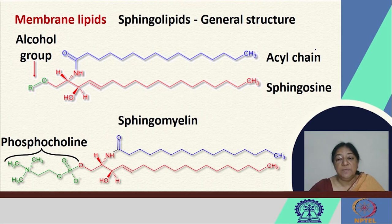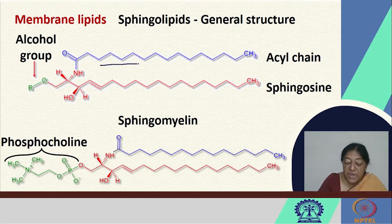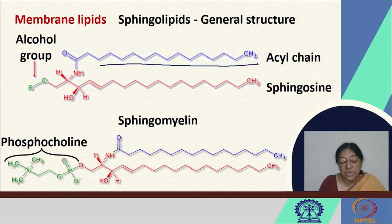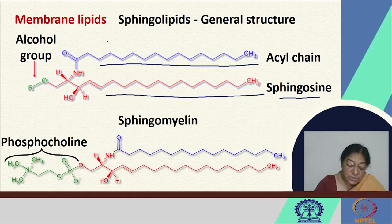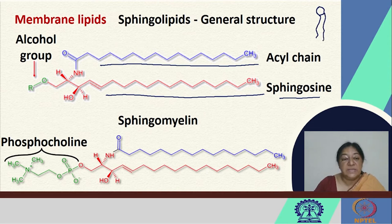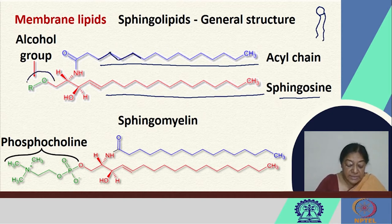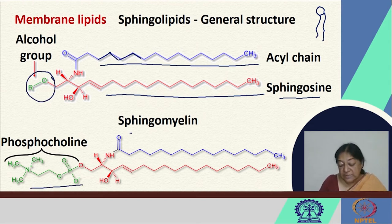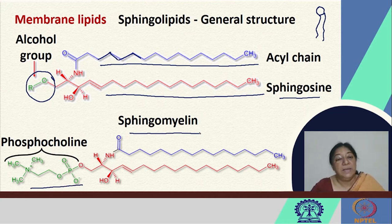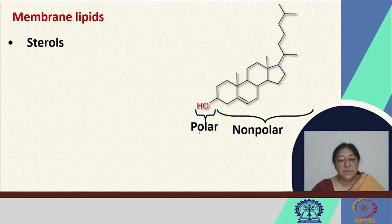Looking at sphingolipids, in this case we have one acyl chain and the other is a sphingosine, based on the fact that we have a polar head group and two hydrophobic tails brought about by the chain of CH2 moieties. The alcohol group can have a phosphocholine, and this is an example of sphingomyelin as a specific type of lipid. All of these form the parts of the lipids.